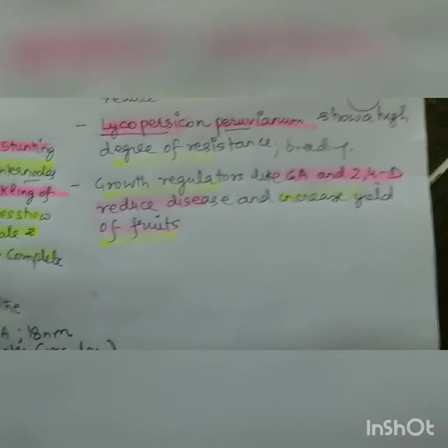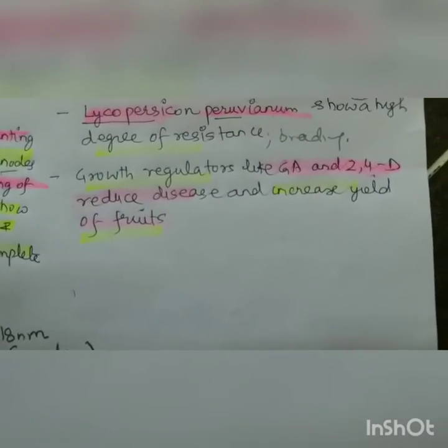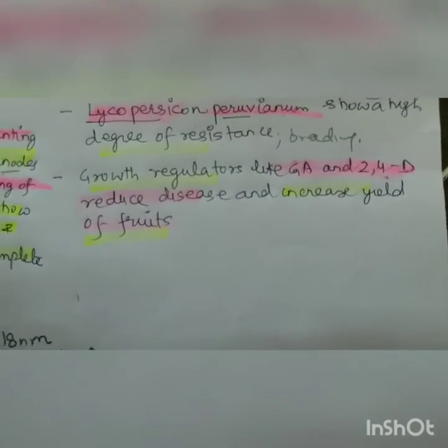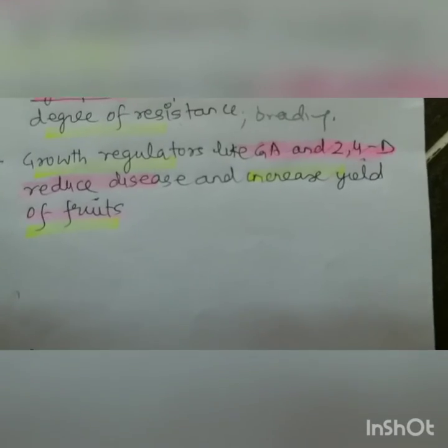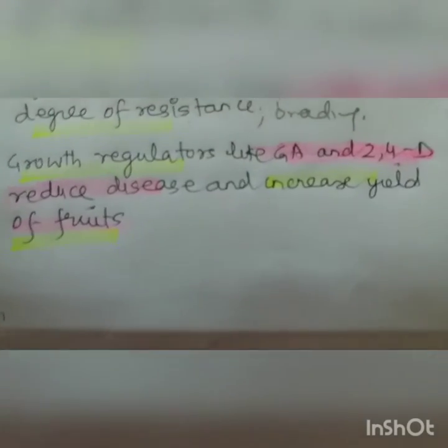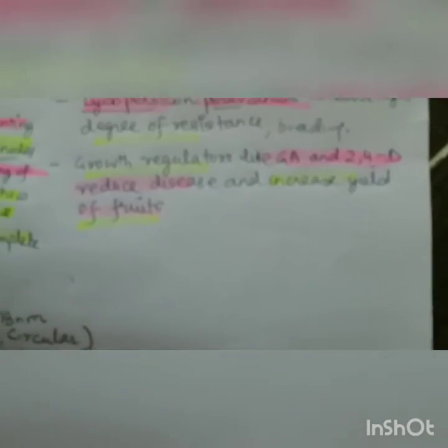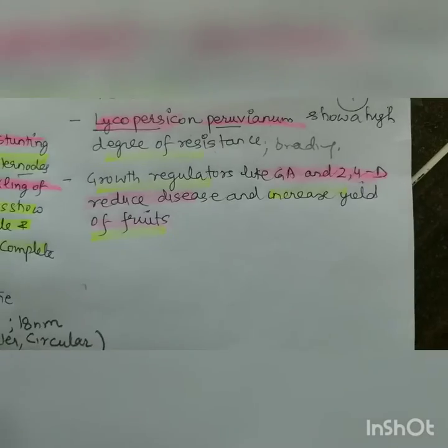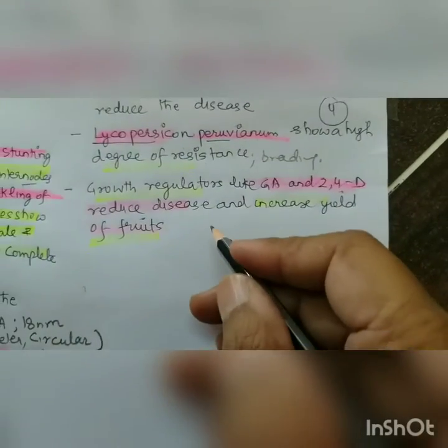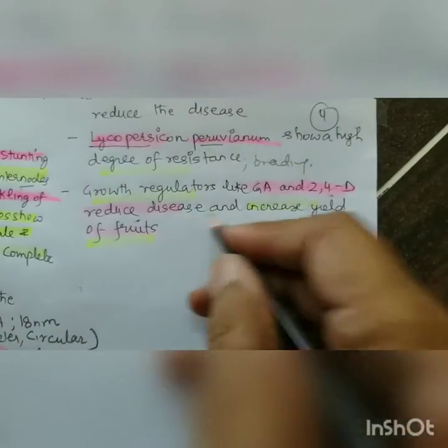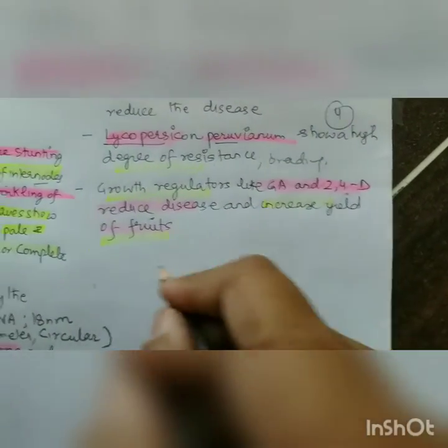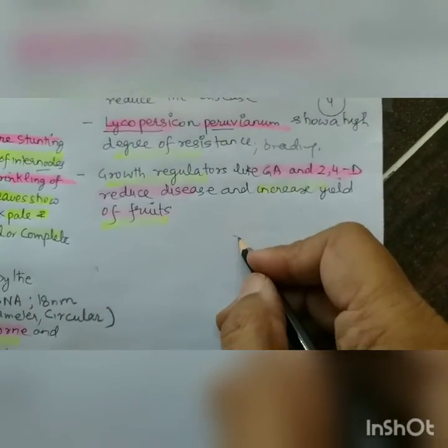Growth regulators like GA (Gibberellic acid) and 2,4-D (2,4-dichlorophenoxyacetic acid) should be used to reduce disease and increase yield of fruits.